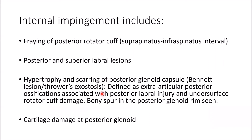Internal impingement also includes a rotator cuff tear at the supraspinatus interval, posterior and superior labral lesion (SLAP), hypertrophy and scarring of the posterior glenohumeral capsule (the Bennett lesion), which is an extra-articular posterior ossification due to posterior labral injury, undersurface cuff damage, a bony spur at the posterior glenoid rim, and cartilage damage at the posterior glenoid.